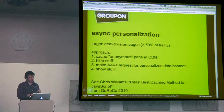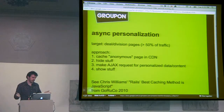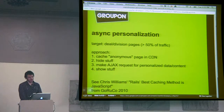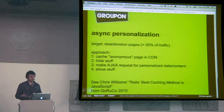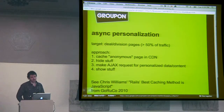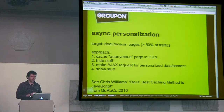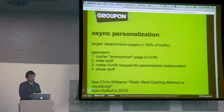To solve these issues, we're using what we're calling asynchronous personalization. There's a great talk from Chris Williams from Gotham Ruby Conference 2010 called 'Rails Best Caching Method is JavaScript,' and we've taken a lot from that. The idea is you can use JavaScript as a caching layer in addition to built-in Rails cache. We cache the anonymous page in the CDN — the same page you'd see with no login, no subscriber cookies. That comes back immediately. Then we hide stuff, make an Ajax request for personalized data and content, and then show stuff. Very simple.